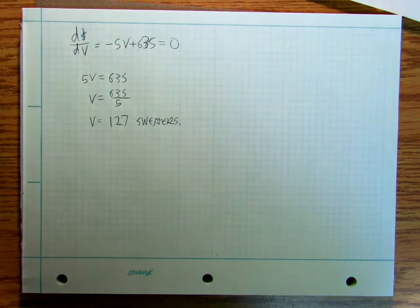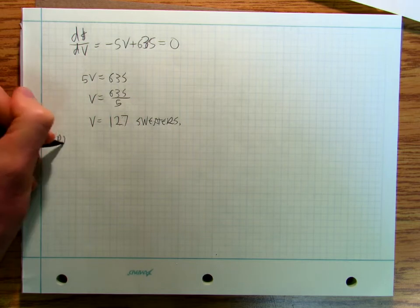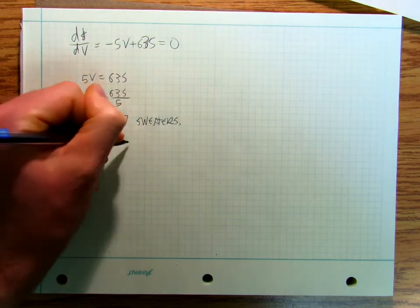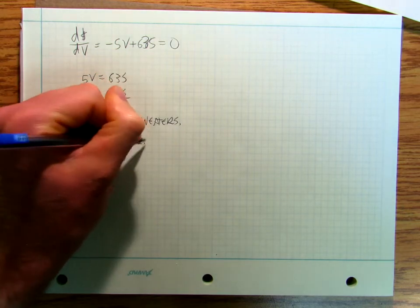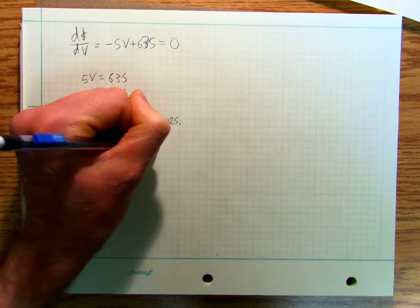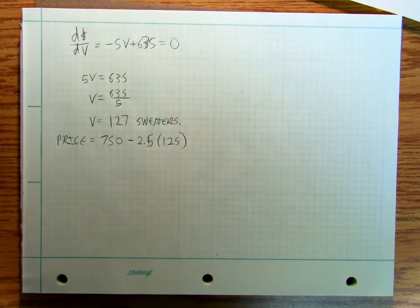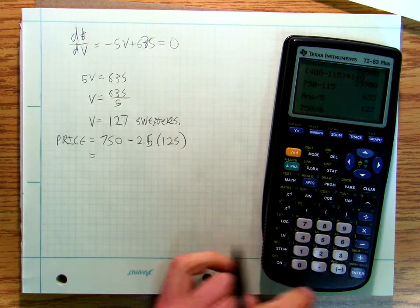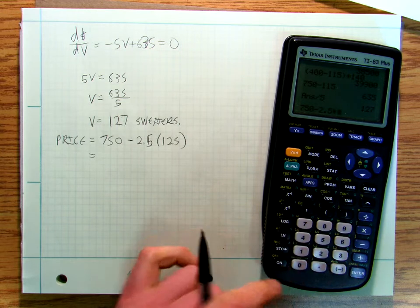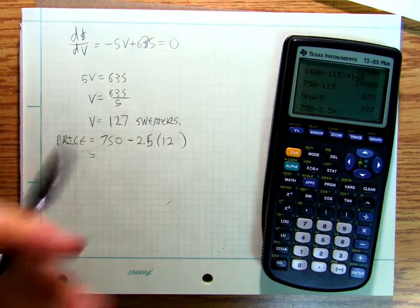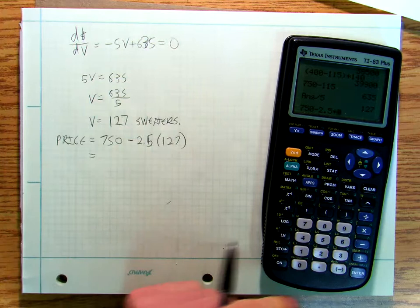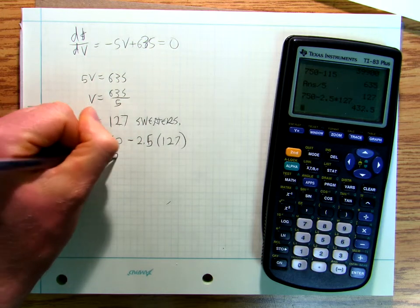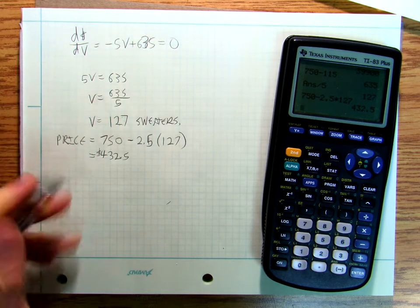Well now what's my price? My price in my little model, my simple model, is going to be 750 minus 2.5 times 127. So my price is 750 minus 2.5 times 127 is $432.50.